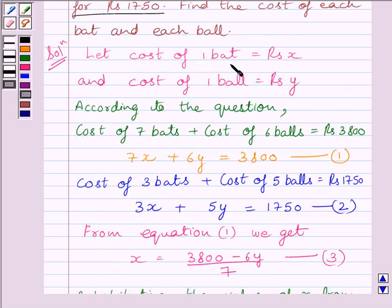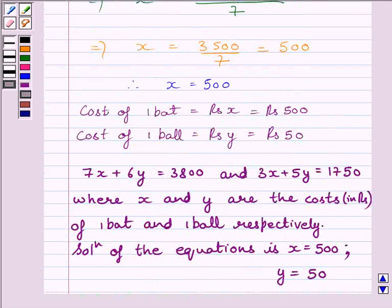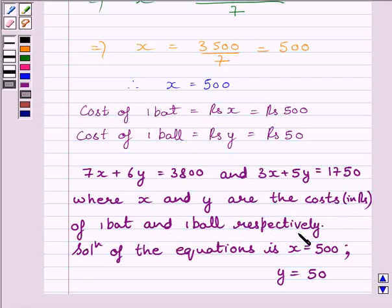So the cost of 1 bat is equal to X, which is Rs. 500, and the cost of 1 ball is equal to Y, which is Rs. 50. Our required equations are 7X plus 6Y equals Rs. 3800 and 3X plus 5Y equals Rs. 1750, where X and Y are the costs in Rs. of 1 bat and 1 ball respectively. The solution is X equals Rs. 500 and Y equals Rs. 50.